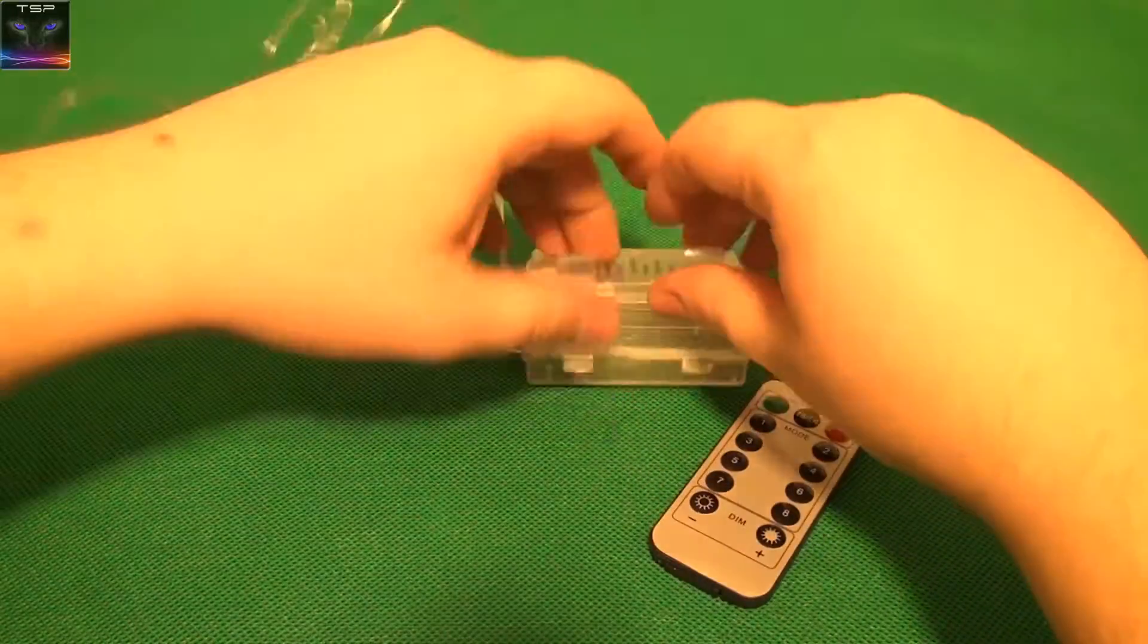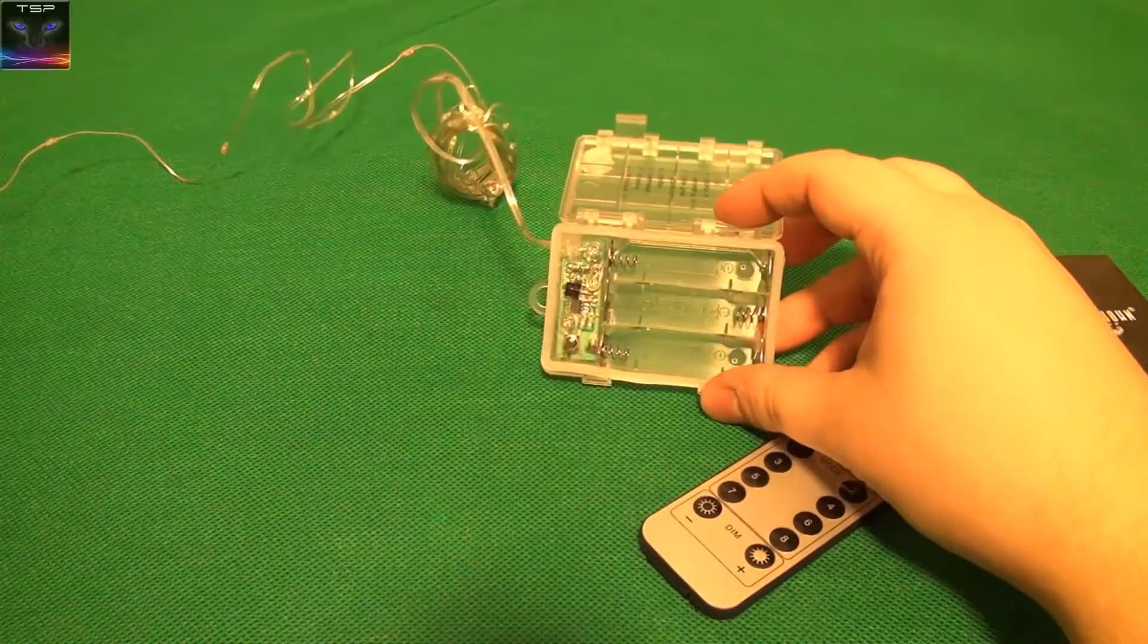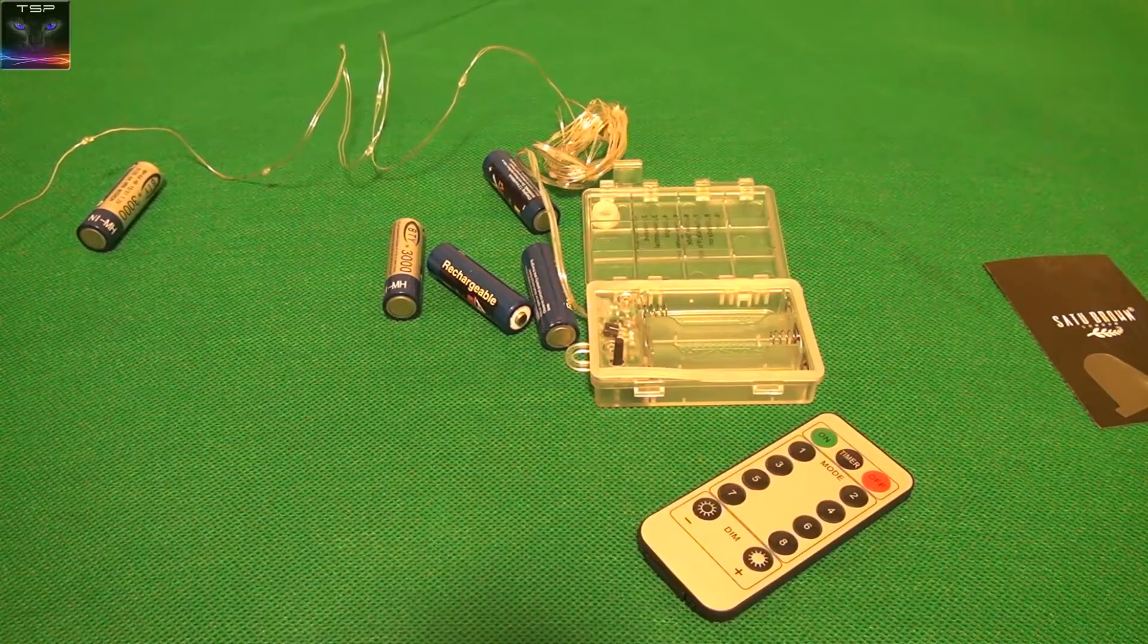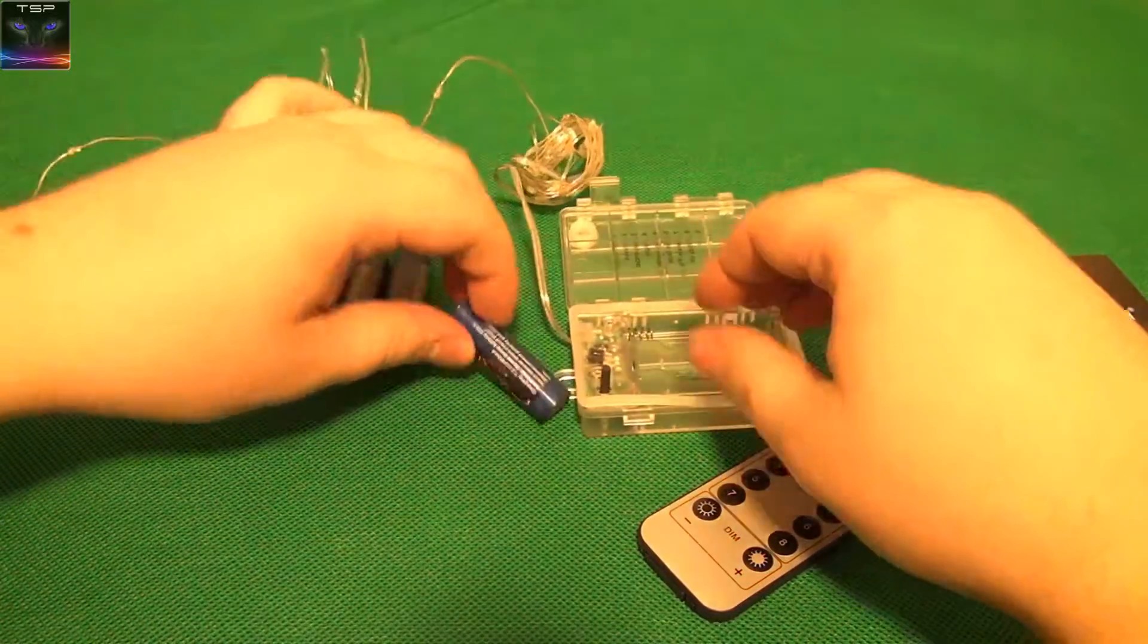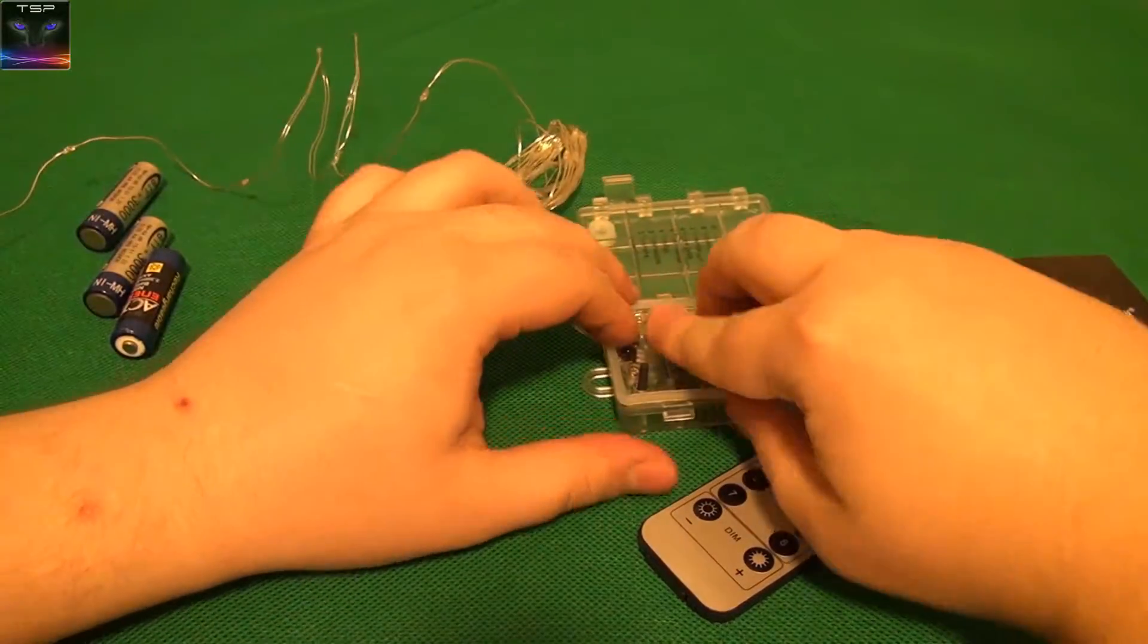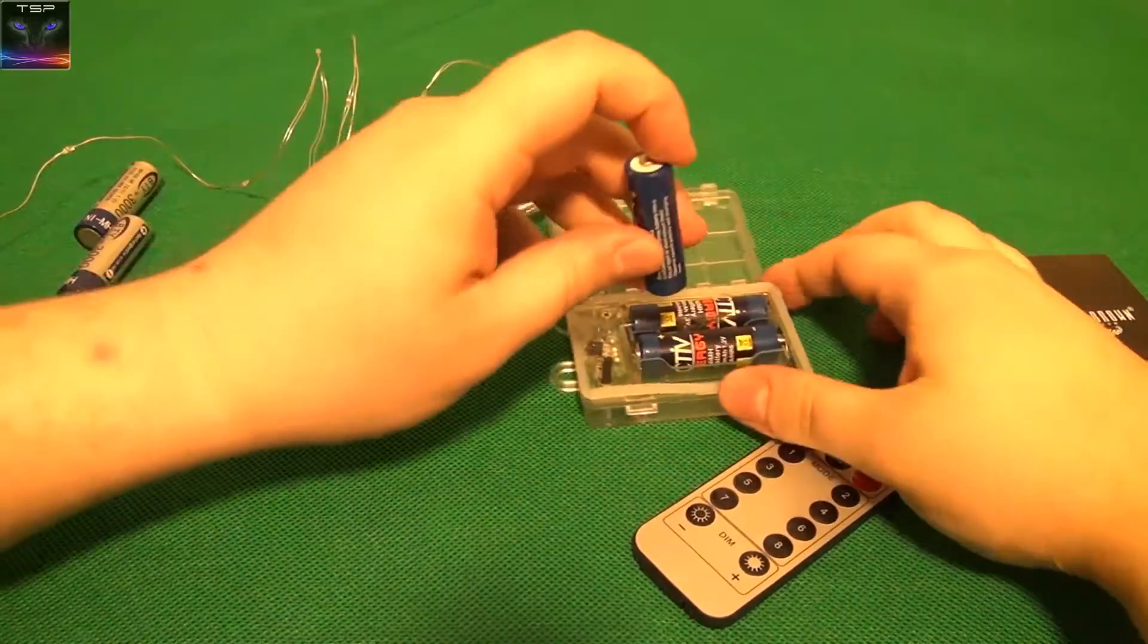Let's try to load some batteries in here. Looks like it takes double A's. This battery is flying all over the place. So this battery and that battery and another this battery.